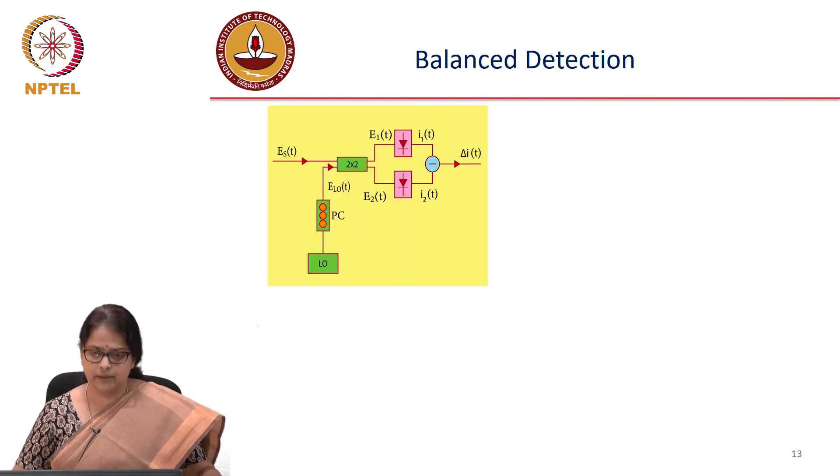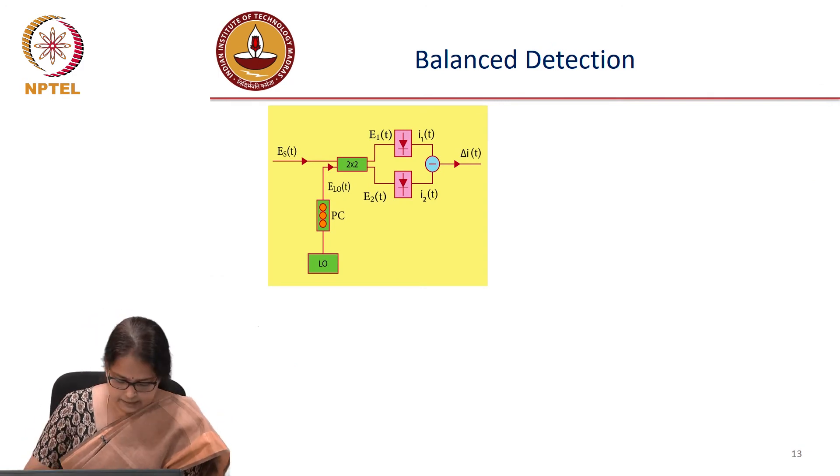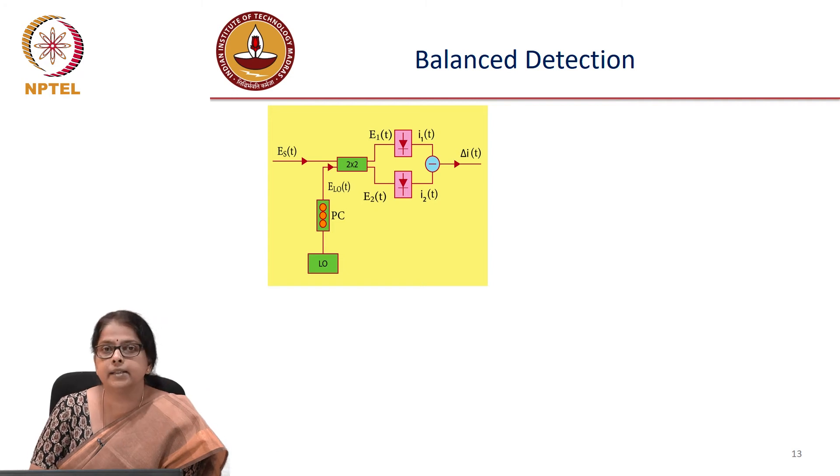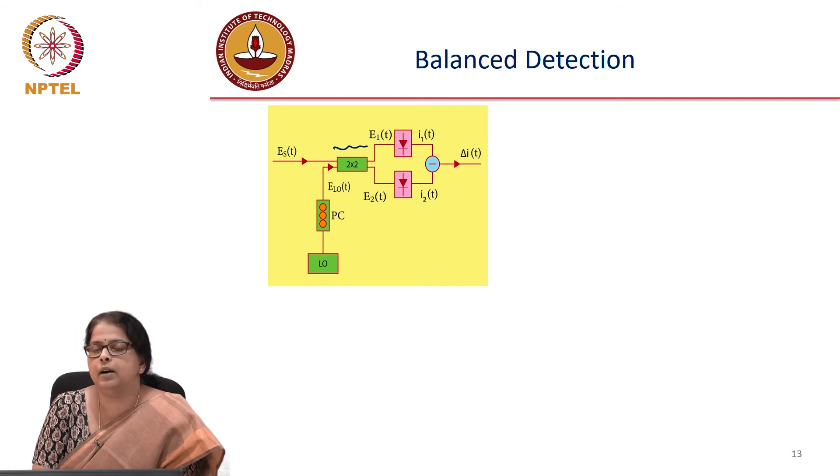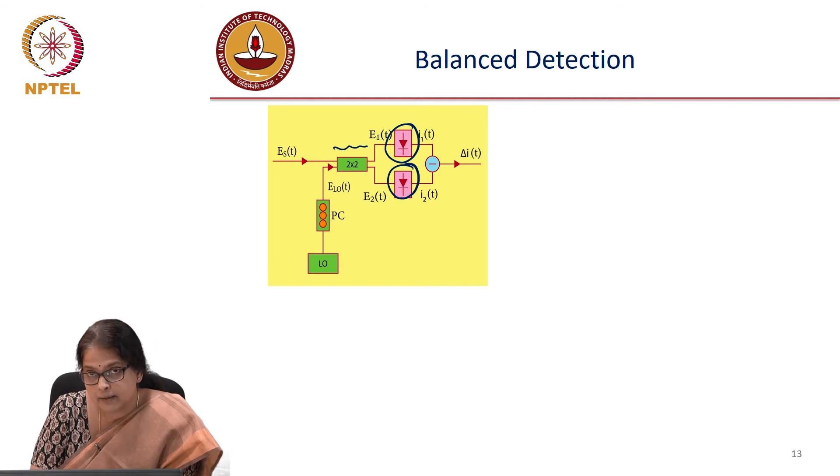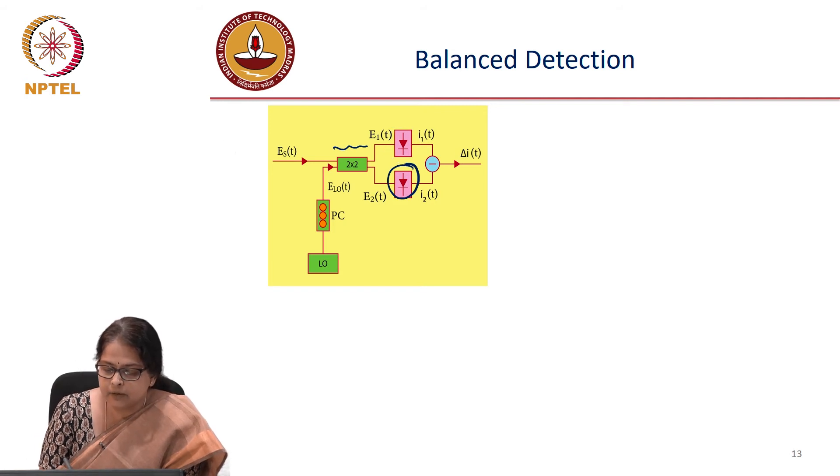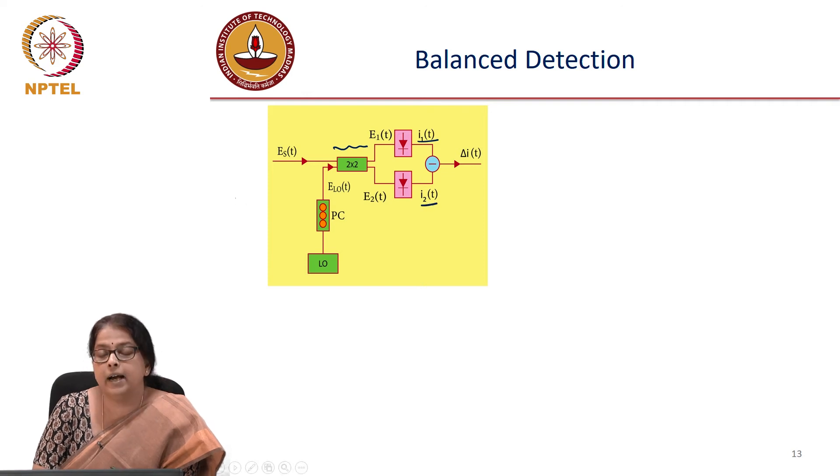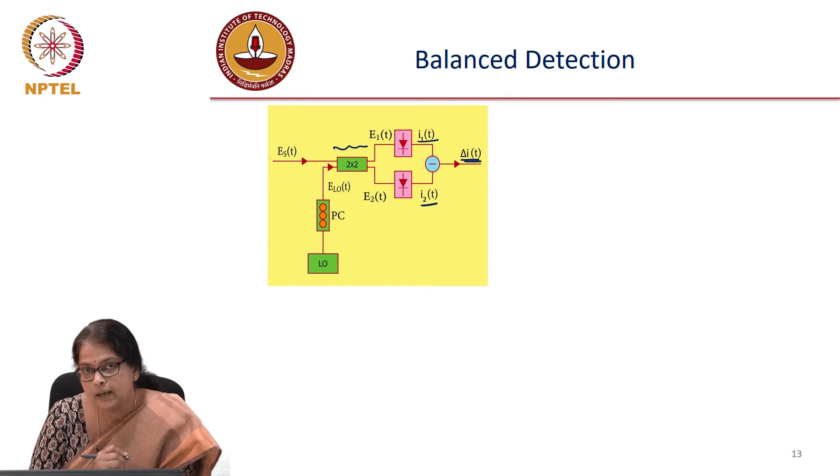So let us first try to resolve some of these issues. Instead of directly beating the signal and LO onto the detector, what if we take it through a 2 by 2 directional coupler? And the output of 2 by 2 directional coupler, instead of connecting it to a single detector, what if we connect the output to 2 pin diodes? So the change that we are doing is we are adding a directional coupler and we are also adding 2 receivers. And let us say I1 is the response of the first detector, I2 is the response of the second detector. The output we are going to take is I1 minus I2.